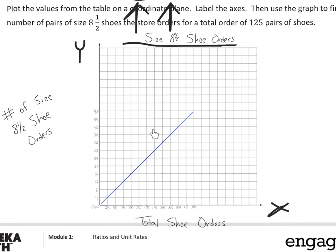And now I can go back and answer my question. How many of the size 8 1/2 shoes would there be if I ordered 125? So I go to 125. And I follow it up to the line. Right here. And it looks like it hits right at 20. So I can mark that point down. If I want to mark that point down. It's going to be a big dot. And then off to the side, I can write my statement.